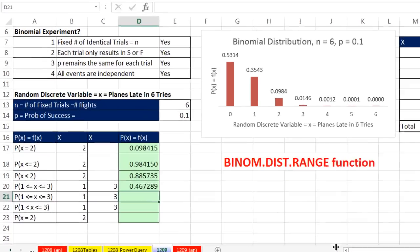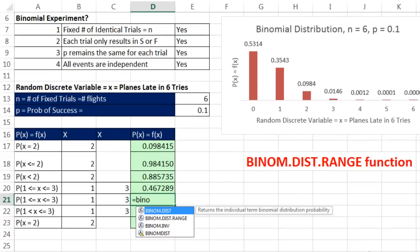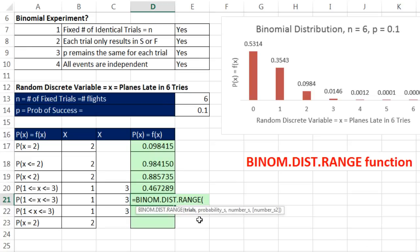Now, let's see this new function equals binom.dist.range. Here, we still have to put the number of trials, six flights per day, comma. The probability of success any particular flight being late is 0.1. And watch this, they give us number of successes, and then in square brackets, a second one. None of that 1 for cumulative or 0 for the probability mass. It's just going to look at our inputs. If we give it just one number of successes, it'll calculate the individual amount. If we give it 2, it'll do between.